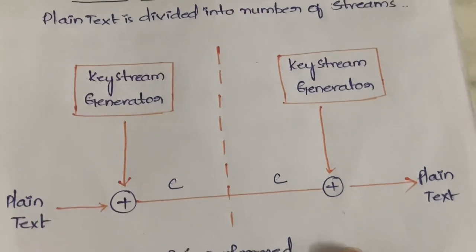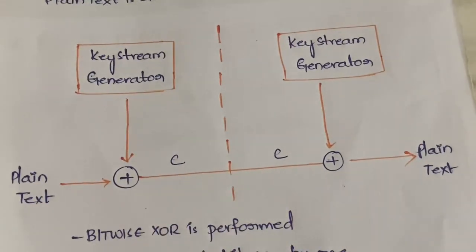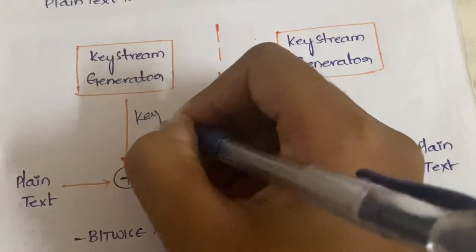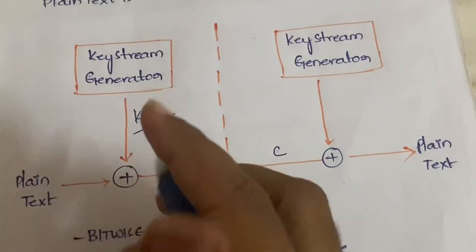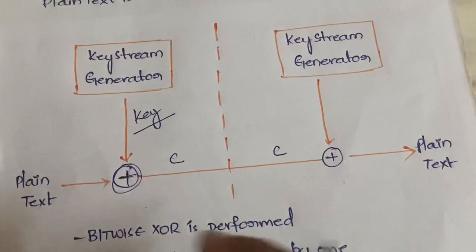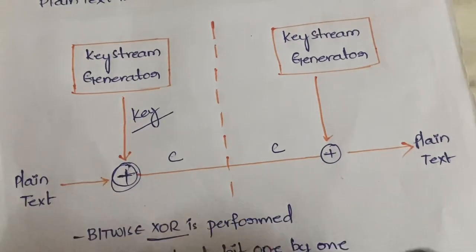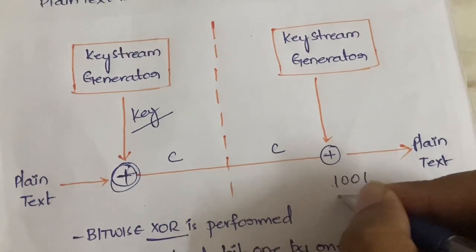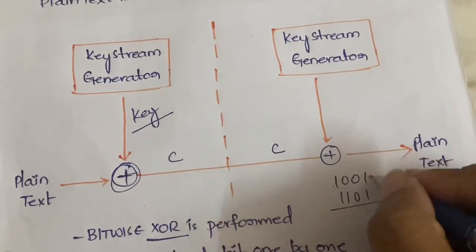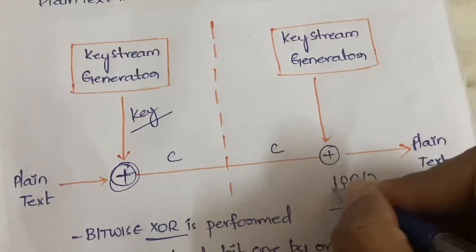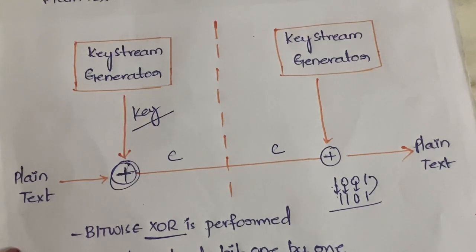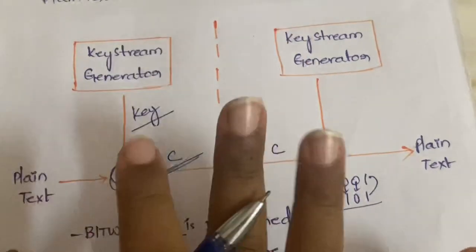I'll explain clearly with the help of a diagram. First you will have the key stream generator — that's where the keys will be generated. You also have the plain text. What you do is perform the XOR operation — a bitwise XOR operation, bit by bit. For example, if the key is 1001 and the plain text is 1101, then bitwise XOR is performed between corresponding bits: 1 and 1, 0 and 1, 0 and 0, 1 and 1.